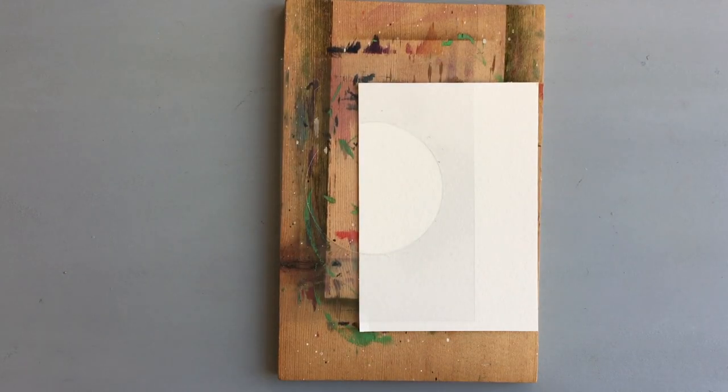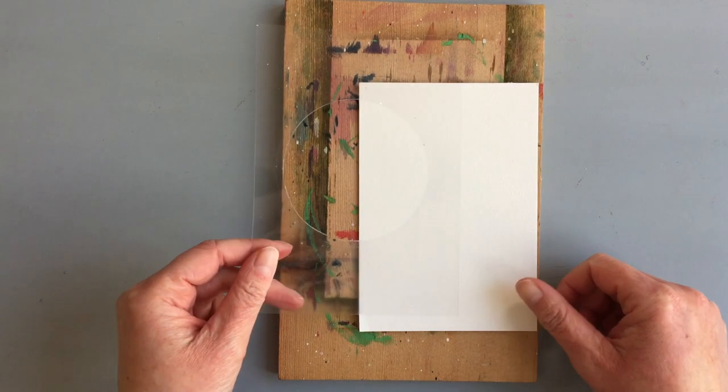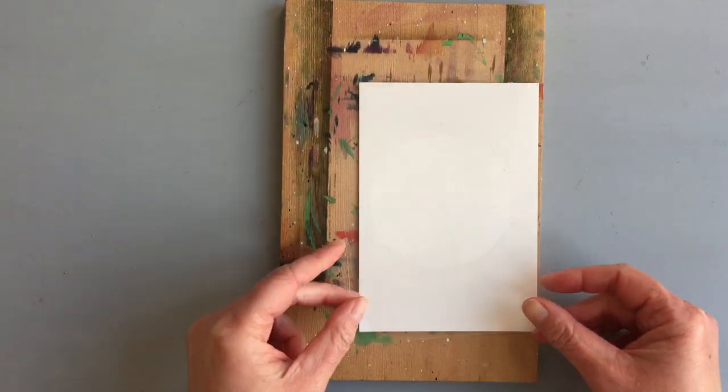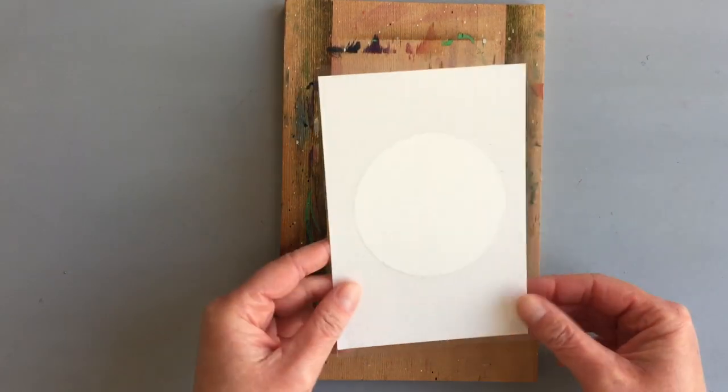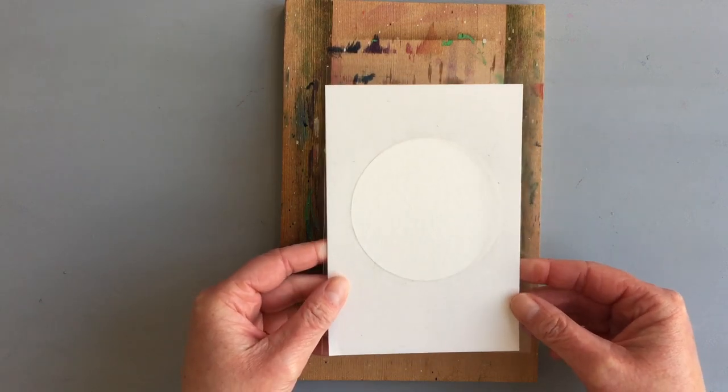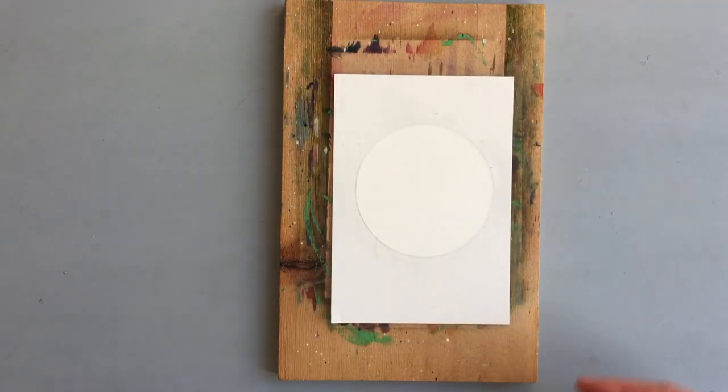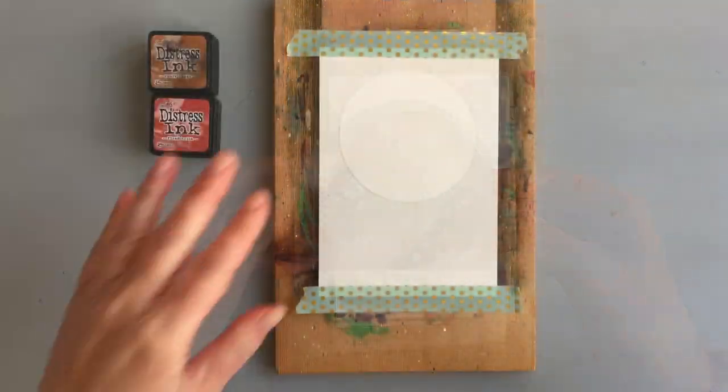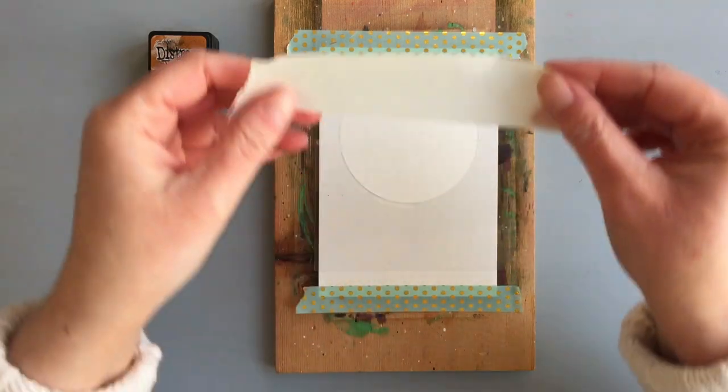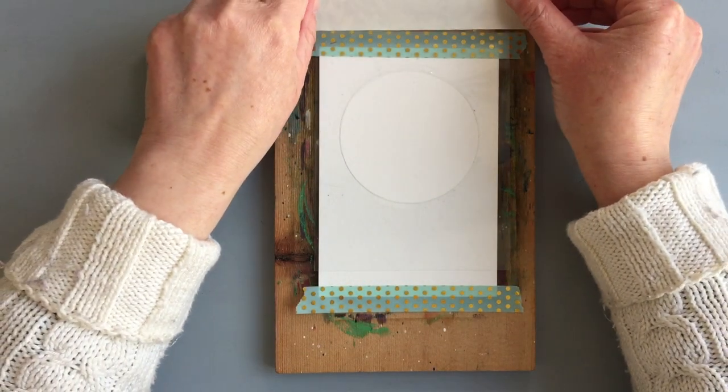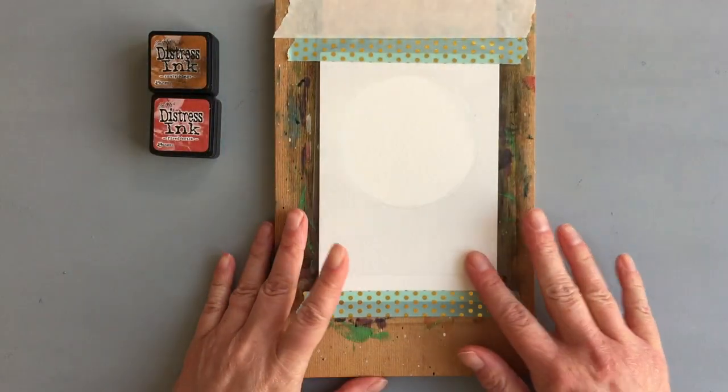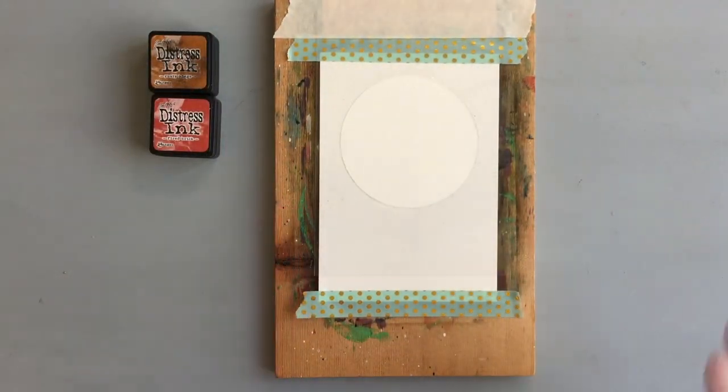For this one I used a stencil. Because I don't have an actual stencil, I made one using a circle die and an acetate. Sometimes I use leftover cardstock to create stencils, but here I wanted to see where I'm placing the stencil, and that's why I used the acetate. For the circle I used a slightly smaller die than the previous one. Before I started with the ink blending, I secured my cardstock onto a board using washi tape and also secured the stencil on top of the cardstock so it doesn't move.